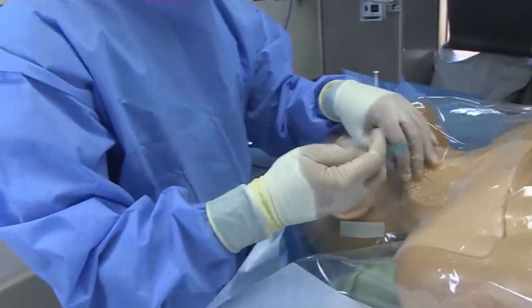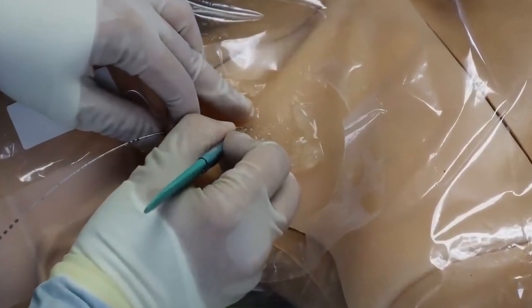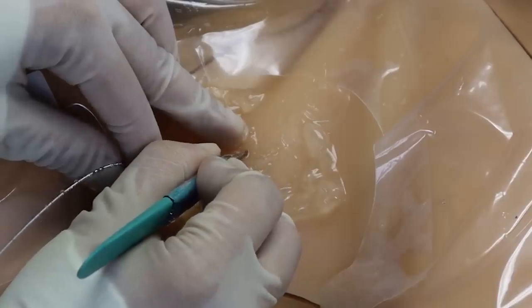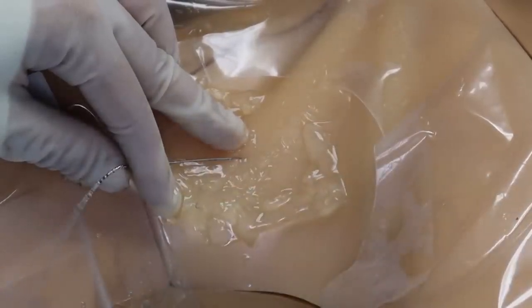Next, grab the 11 blade and slide it down the wire, inserting just the tip right into the puncture site with the sharp edge facing away from the wire. Apply pressure away from the wire as you pull the knife out of the skin to make a small nick at the skin which you can fit the dilator through.